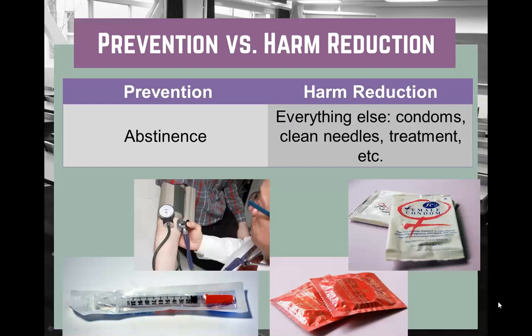Now I want to talk a little bit about prevention and harm reduction. The only method of 100% prevention is abstinence. However, we have some pretty great methods for harm reduction that can be up to 99% effective. One of them — which I'll talk about a little later — is PrEP. But we also have condoms, clean needles, and getting tested regularly, adhering to that on a regular basis depending on how often folks come into contact with a risk factor.